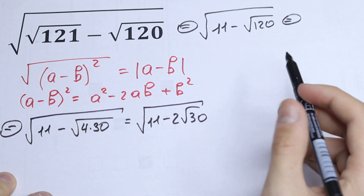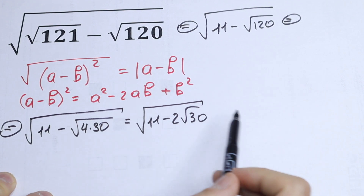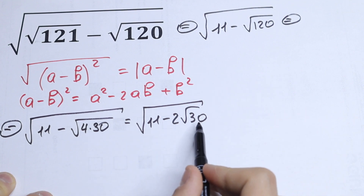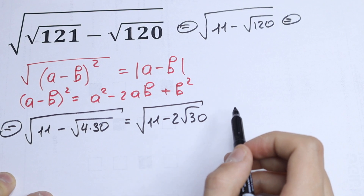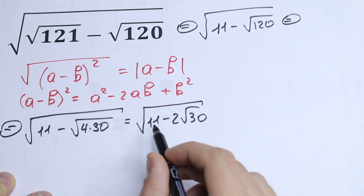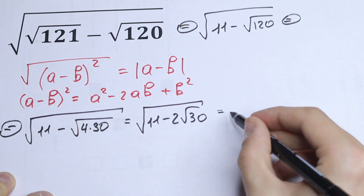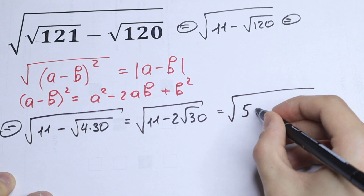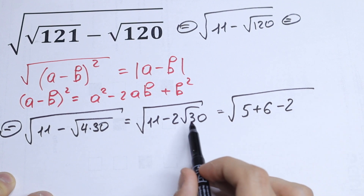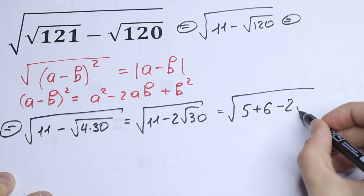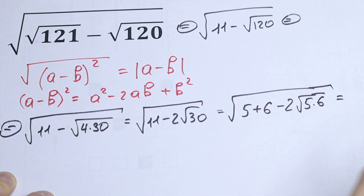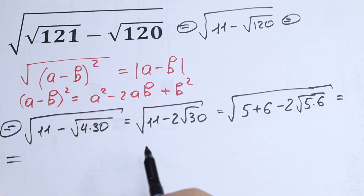What do we do next? We have 11 right here, but we don't have our second number — we don't have our b. As you can see, 30 is a product of 5 times 6, and 11 can be written as 5 plus 6. So let's write 11 as (5 plus 6) and write the square root of 30 as the square root of (5 times 6). These are really easy steps.